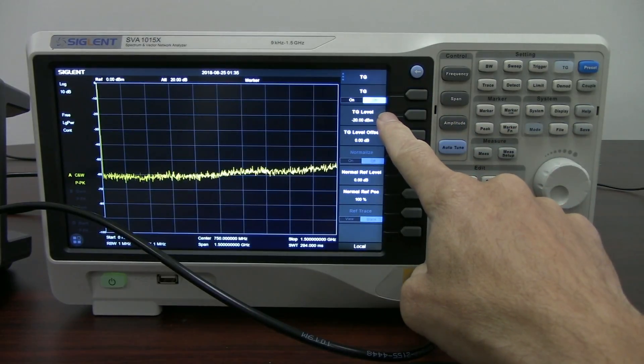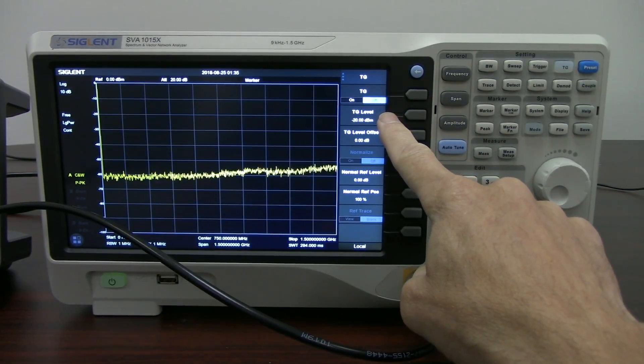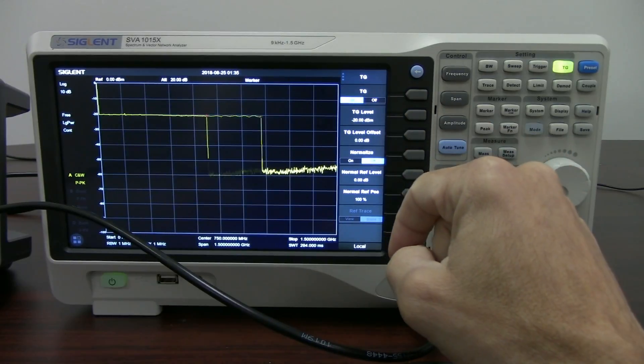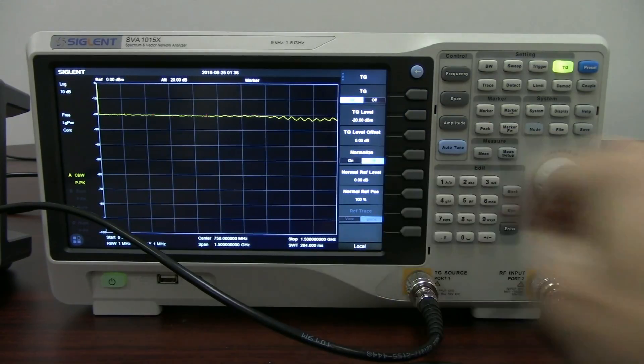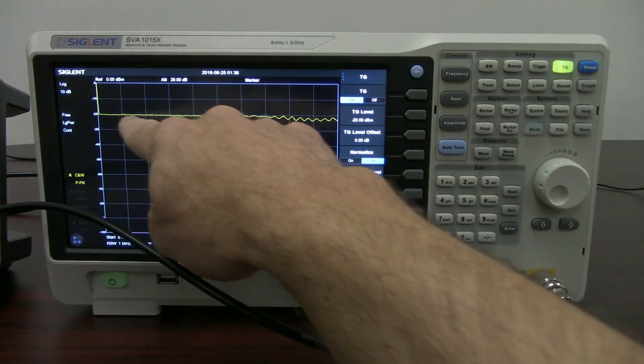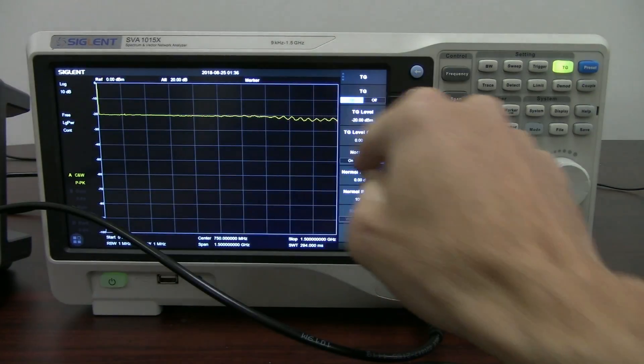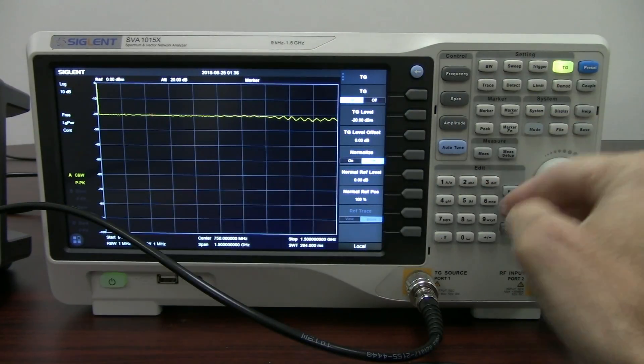And you'll see that the tracking generator level is set to minus 20 dBm. So when we turn on the tracking generator, lo and behold, we've got a line right here coming across about minus 20 dBm. A lot of the ripples and things that you see are totally normal. They're within specifications.